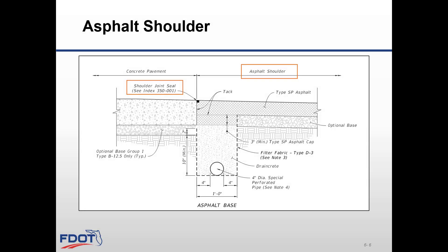This is a typical section for an asphalt shoulder over asphalt base adjacent to concrete pavement. This also shows the DrainCrete edge drain subdrainage as mentioned in Module 4. What is important to highlight is that between the concrete and asphalt, there will be a tack coat and a shoulder joint seal using Standard Plans Index 350-001 for concrete and asphalt shoulder joint — use self-leveling silicone or hot-pour sealant material.